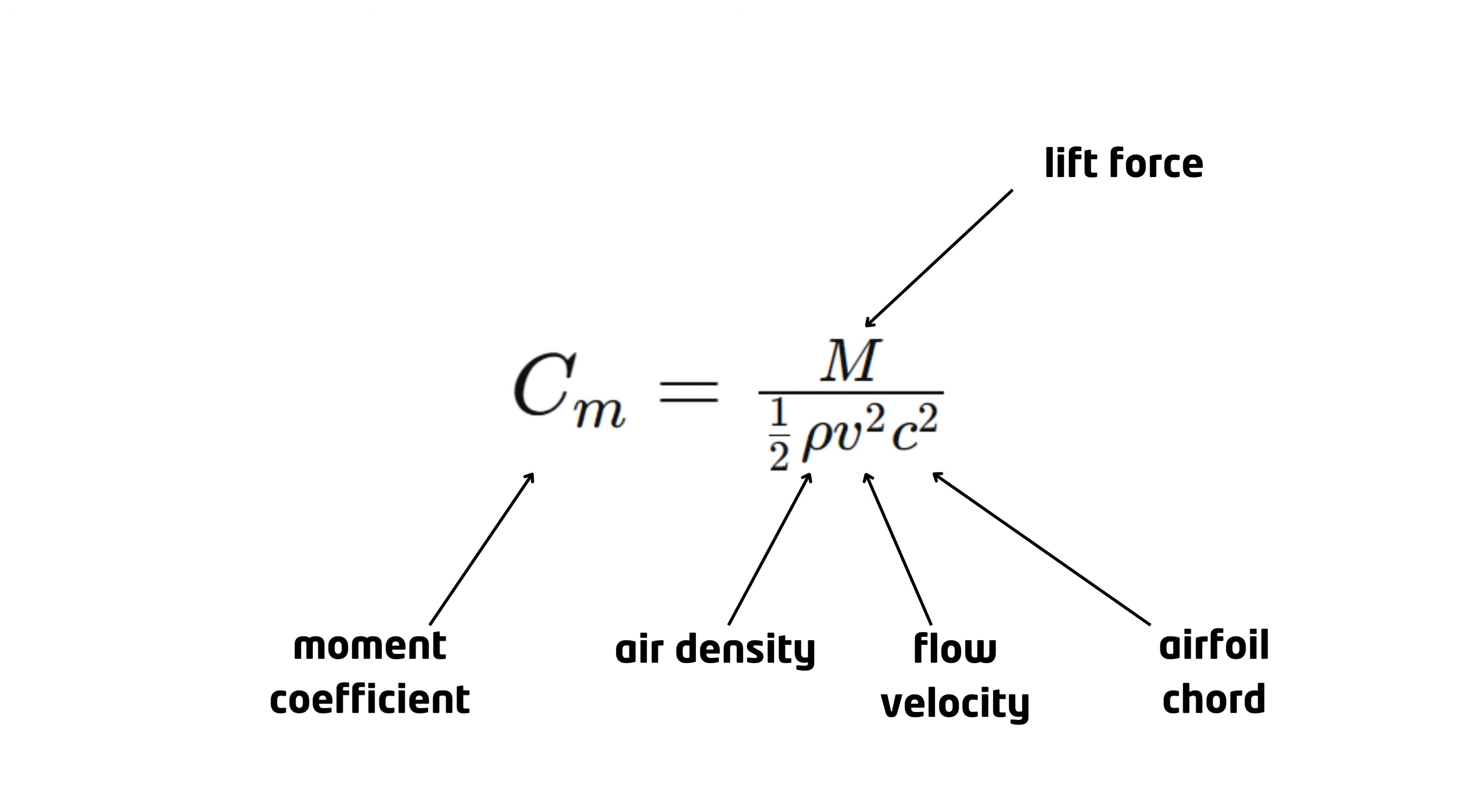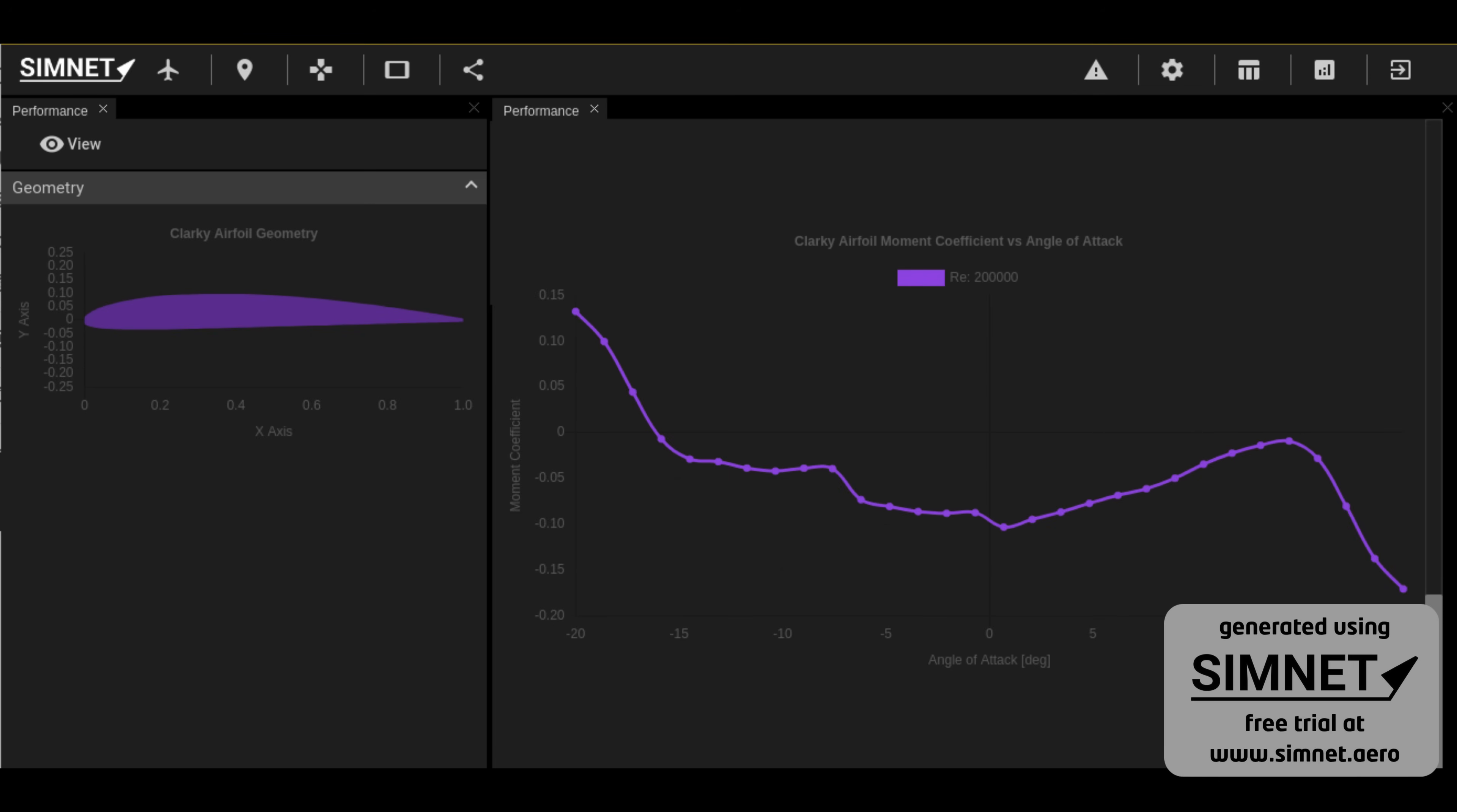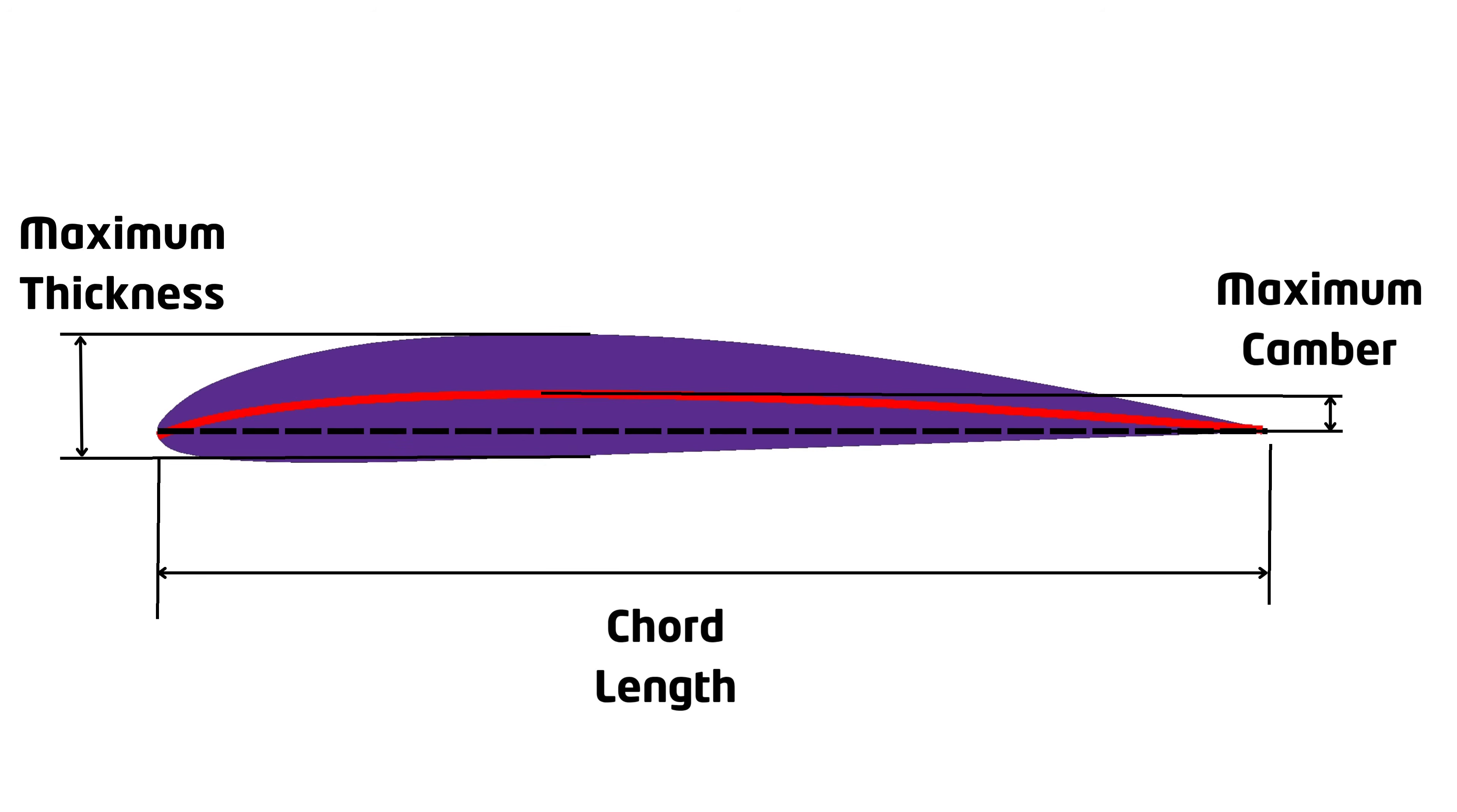Like the lift and drag, the moment is also expressed through the airfoil moment coefficient. This is how the moment coefficient looks for the Clark Y airfoil. Notice that it has a negative value over a large part of its angle of attack range, meaning it produces a pitch down moment. Unlike the lift and drag coefficients, the value of the moment coefficient varies depending on the point around which it is measured. It is customary to measure the moment coefficient around the point located along the chord line, one quarter of the way from the leading edge to the trailing edge of the airfoil.